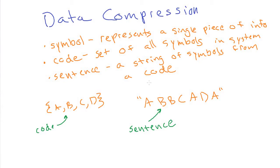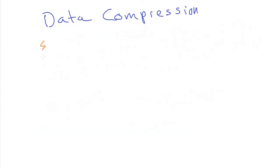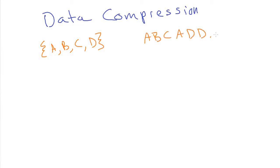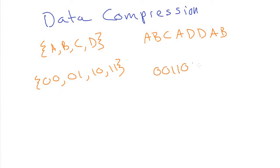The next thing to talk about are different types of codes. If we have a code like A, B, C, D, our sentences don't need any separators because the symbols are all exactly length one. And even if they were length two — like a binary code with 00, 01, 10, 11 — we still don't need separators because all our symbols are the same size. We know that every two bits we have a new symbol, so we don't have to put any separators in.